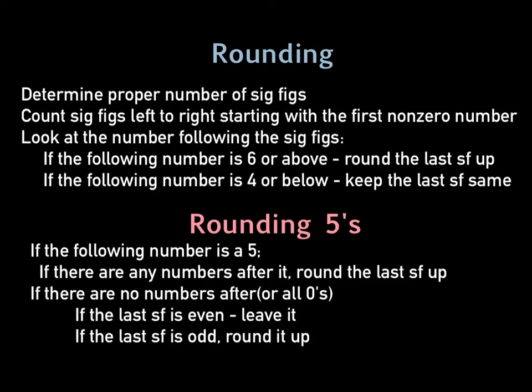Rounding with sig figs can be a little bit different than you do in math class where normally you're rounding to a certain place value. Rounding with sig figs is rounding to the correct number of sig figs. So first of all, you've got to determine that proper number. Then you're going to count the sig figs from left to right, starting with the first non-zero number. And then look at the number following the sig figs. If that next number is 6 or above, then we're going to round that last significant figure up. If it's 4 or below, then we're going to keep that last significant figure the same.